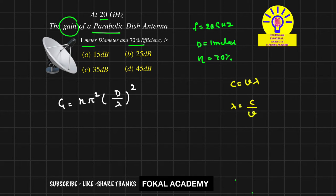Here C means velocity of light, that is equal to 3 into 10 power 8 meters per second, and frequency is given as 20 GHz, that is 20 into 10 power 9. So that's equal to 3 by 200 meters. So this is the wavelength value.